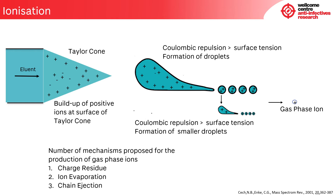If we look in more detail at the ionization process, in this case in a positive ion electrospray, there is a separation of charge caused by the voltage applied to the needle. On the Taylor cone, there's a buildup of positive ions at the surface. This leads to the emission of a stream of liquid which eventually forms a series of charged droplets. These droplets have an elongated shape, rather like a piece of chewing gum being pulled out of somebody's mouth. The buildup of charge at the surface of the droplet eventually overcomes the surface tension of the liquid, and the droplet breaks up into smaller droplets. This process can be repeated a number of times until eventually ions enter the gas phase and are then taken into the mass spectrometer.